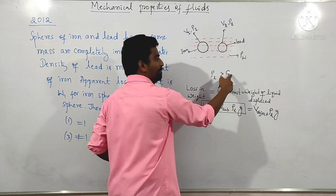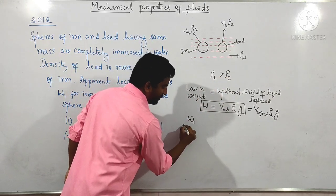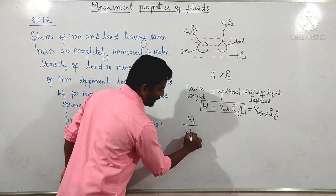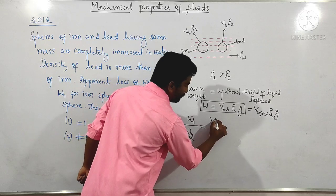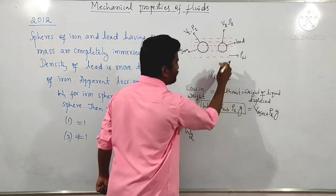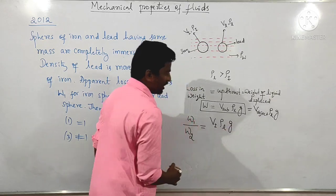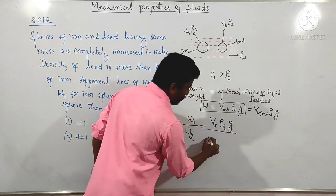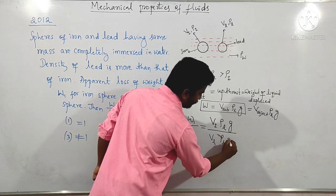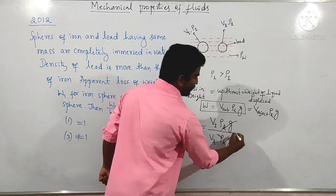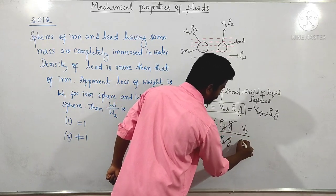Density of lead is greater than density of iron. So, loss in weight of iron to loss in weight of lead equals volume of iron multiplied by density of the liquid multiplied by g, divided by volume of lead multiplied by density of the liquid multiplied by g. The density of liquid and g get cancelled out, leaving simply the ratio of volume of iron to volume of lead.